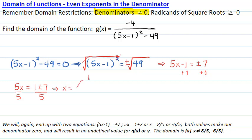x equals 1 plus 7 divided by 5 or 1 minus 7 divided by 5. These solutions are 8 divided by 5 or negative 6 divided by 5. Both of these values make our denominator zero and must be excluded from the set of real numbers. Therefore, the domain for this function g is all real numbers x such that x is not equal to 8 over 5 or negative 6 over 5.